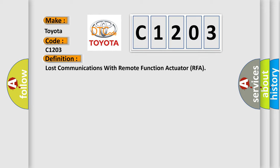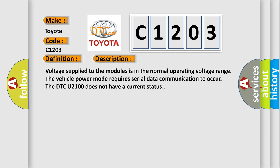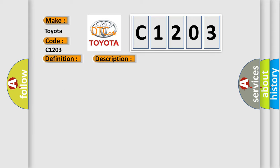And now this is a short description of this DTC code. Voltage supplied to the modules is in the normal operating voltage range. The vehicle power mode requires serial data communication to occur. The DTC U2100 does not have a current status. This diagnostic error occurs most often in these cases.